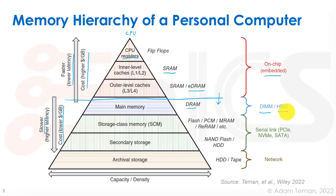The next level down is what we call secondary storage. The newer category here is storage class memory or SCM, based on different types of devices developed over the past several decades that are currently emerging. This includes flash, PCM, MRAM, ReRAM, etc., which we'll discuss later. For secondary storage, NAND flash has dominated, making up our SSDs. We also have hard disks — the magnetic hard disks — which refuse to die. Archival storage is accessed through the network, with very many cycles to access it, using magnetic hard drives and tapes, possibly through a faraway server.